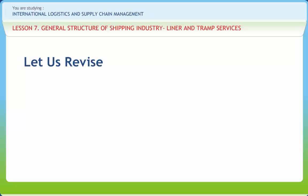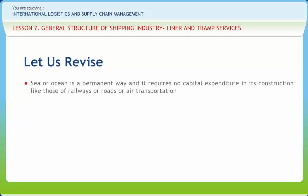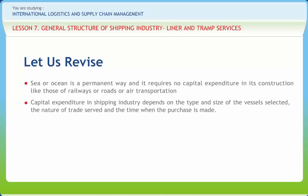Before we end, let us briefly revise what we have studied. The ships carry a sizeable quantity of goods traffic in world trade and the fluctuations will have an impact on the movement of seaborne trade. Shipping industry has certain special characters. Sea or ocean is a permanent way and it requires no capital expenditure in its construction like those of railways, roads, or air transportation. No annual maintenance is required. Terminal facilities needed for ships are generally maintained by port authorities, and shipping companies can avail them on payment of charges. Capital expenditure in shipping industry depends on the type and size of the vessel selected, the nature of trade served, and the time when the purchase is made. The working or operating expenses in shipping may be divided into constant and variable charges. Variable charges represent the smaller percentage and move with the volume of traffic.